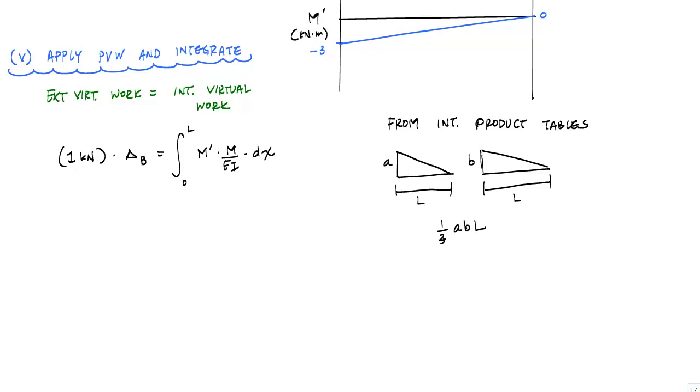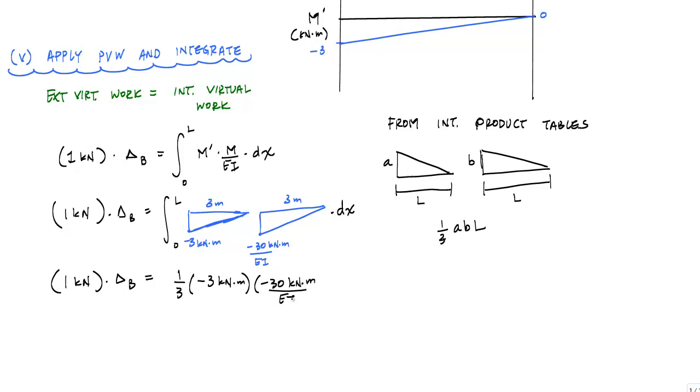What I like to do is set up my integral and draw the triangle shape of the moment diagrams. I would have 1 kilonewton equals 0 to L. My virtual moment diagram is negative 3 kilonewton meters, 3 meters for the length. My real moment diagram, 3 meters for the length. This is negative 30 kilonewton meters. Because really what we're looking at here is a curvature is over EI. If I integrate this out, I will get that this 1 kilonewton equals one-third negative 3 kilonewton meters times negative 30 kilonewton meters over EI times 3 meters.